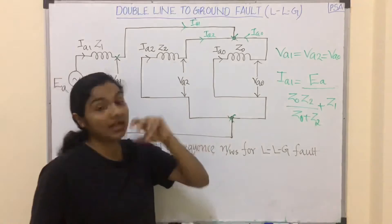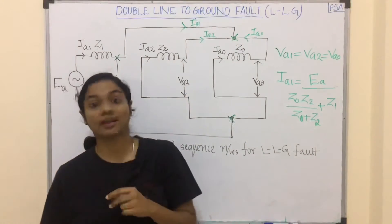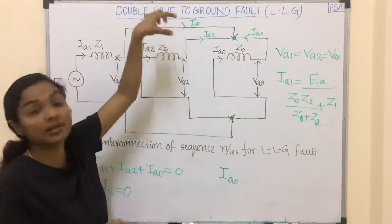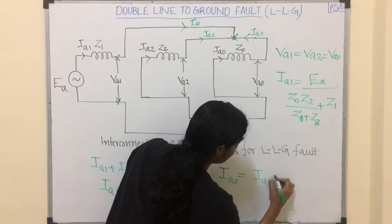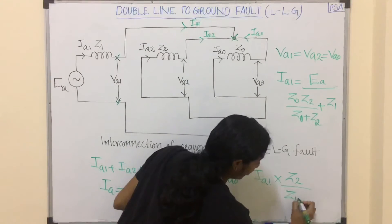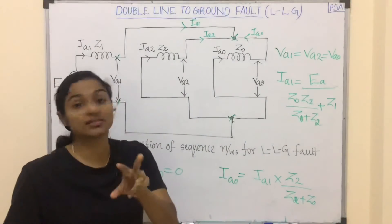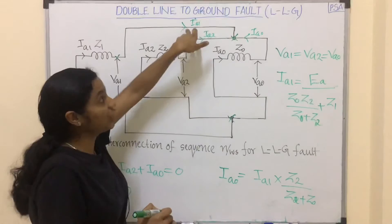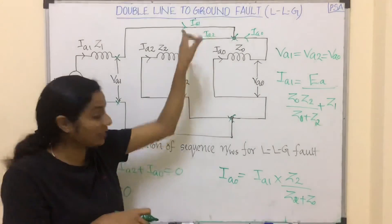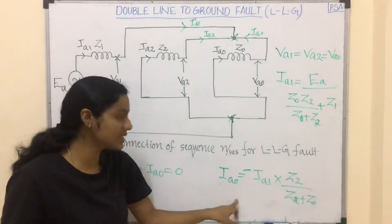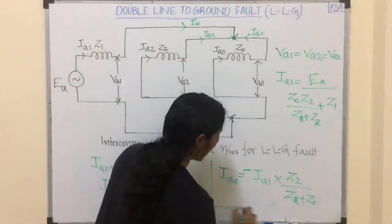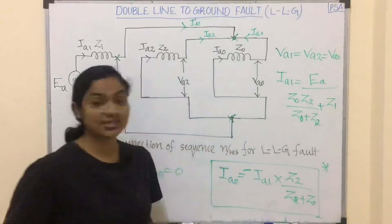If asked to find Ia0, we apply the current division rule. The total current Ia1 splits between Z0 and Z2 branches. Since the current direction in the Z0 branch is reverse, we take a negative sign: Ia0 equals minus Ia1 times Z2 divided by (Z2 plus Z0). This is the value for Ia0.